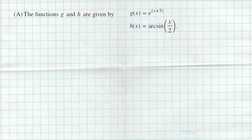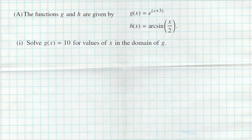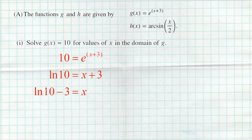Part A says the functions g and h are given below. g of x equals e raised to x plus three and h of x is arc sine of x divided by two. Part one says to solve g of x equals 10 for values of x in the domain of g. The first thing we do is take g of x and set it equal to 10, so e raised to x plus three equals 10. Because x is in the exponent, I need to turn this exponential equation into a logarithmic equation, so I use natural log base e of 10, and that equals x plus three.